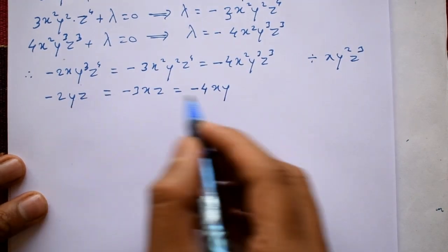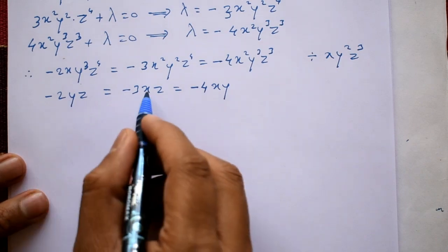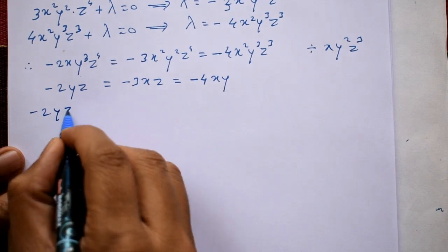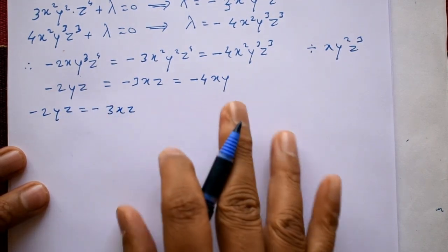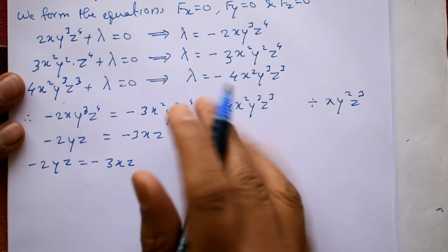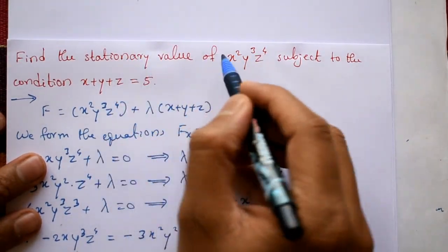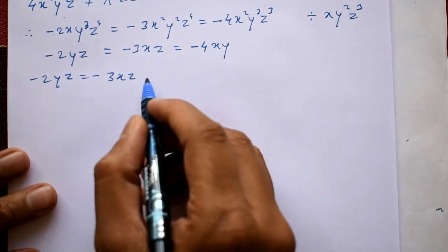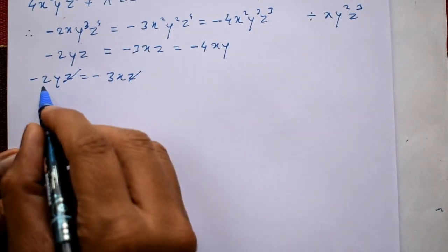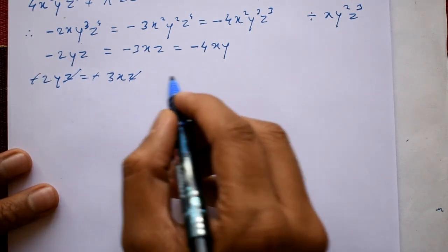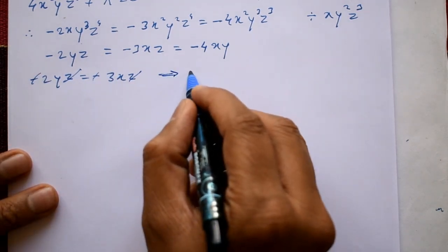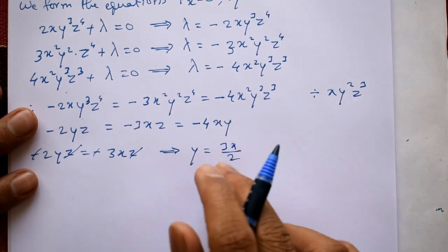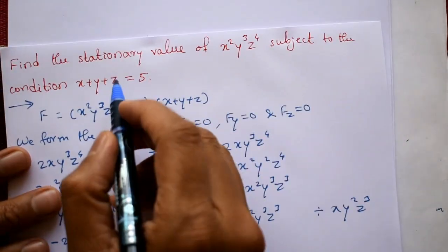Taking the first two equations: minus 2yz equals minus 3xz. Both sides z cancels, giving 2y equals 3x, so y equals 3x divided by 2.